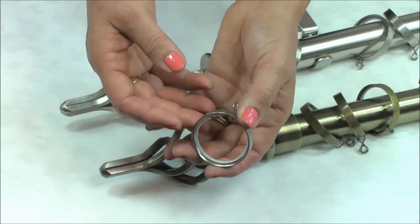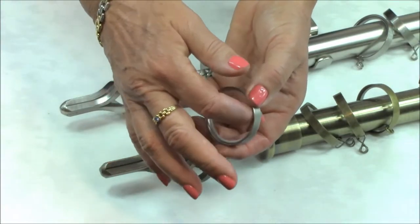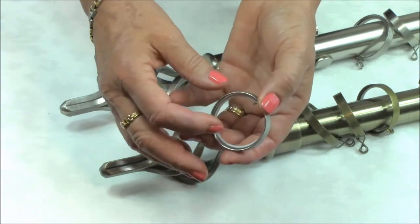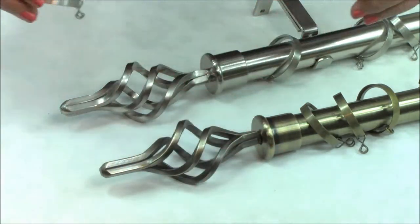The matching metal curtain rings have a nylon lining which allows them to glide quietly across the pole when the curtains are opened and closed.